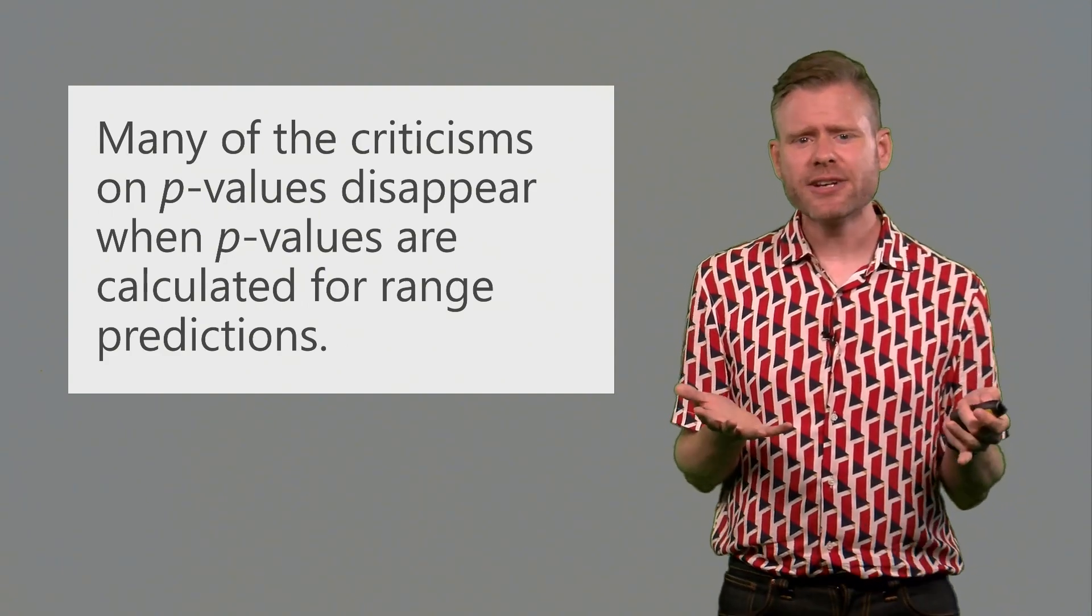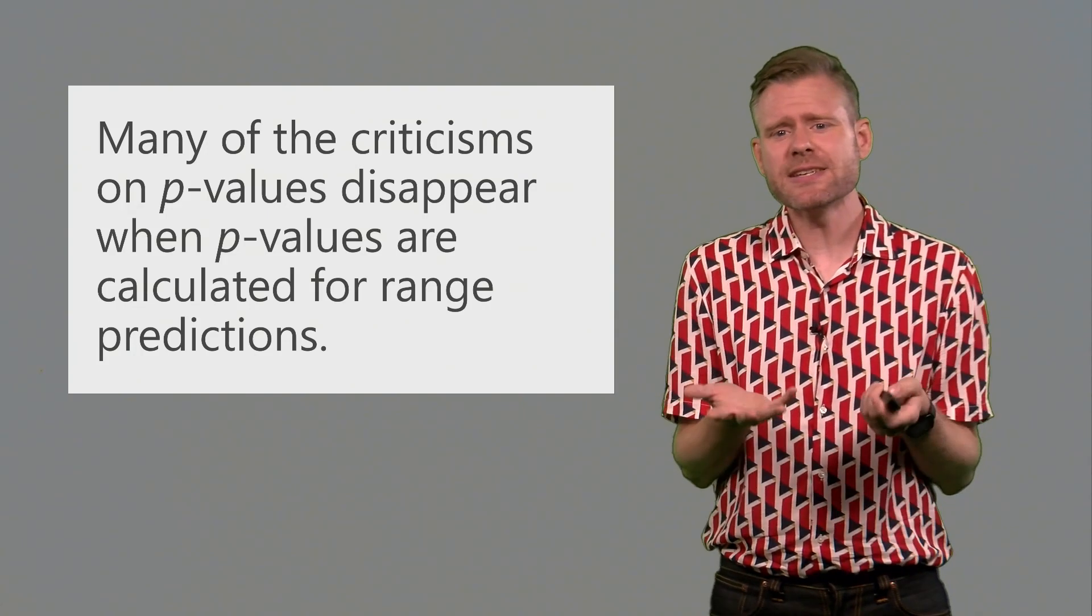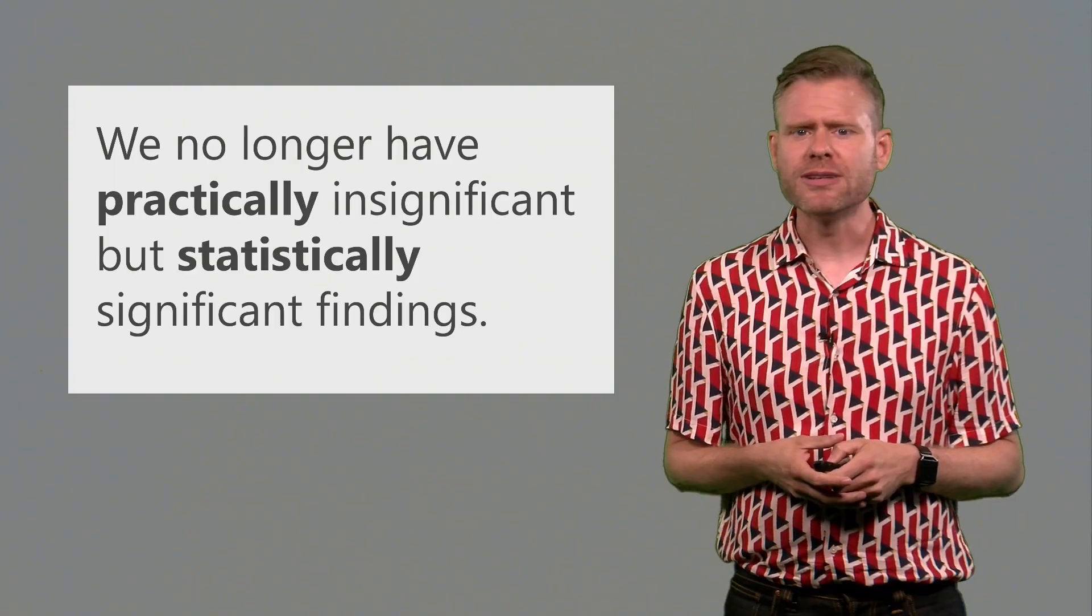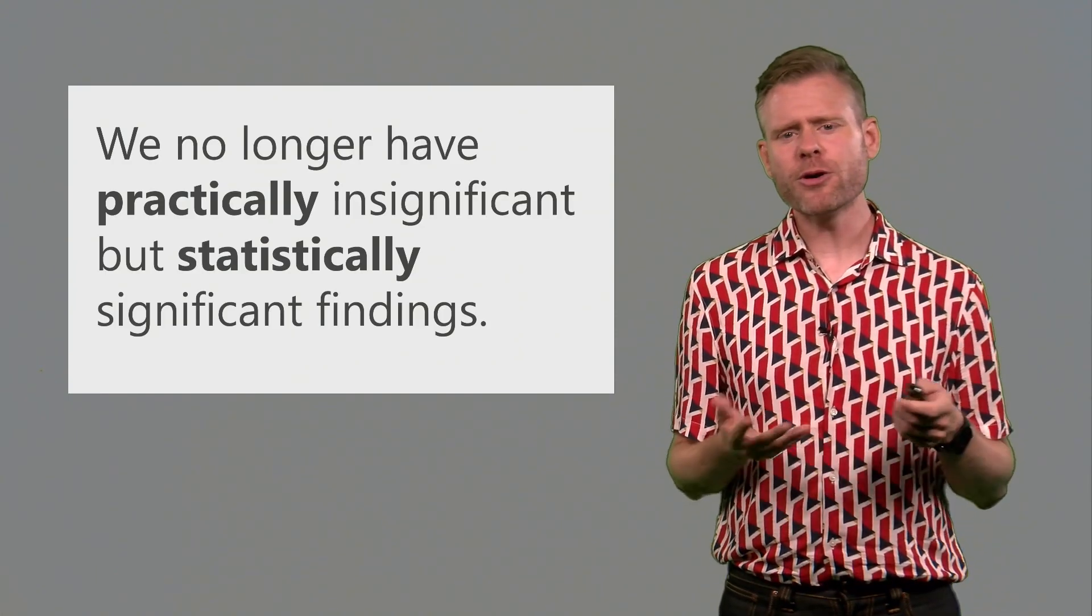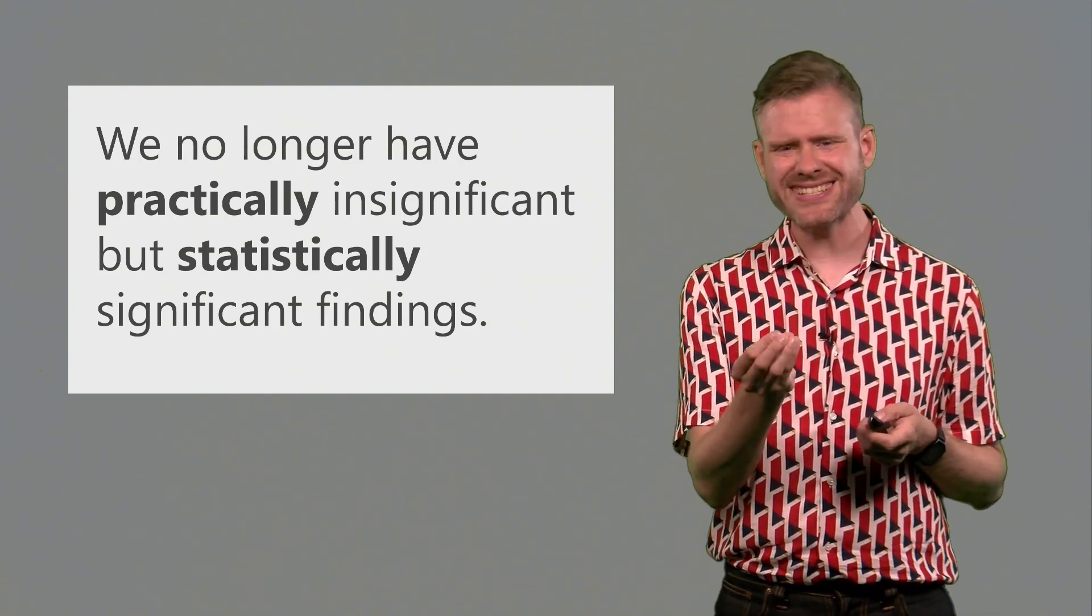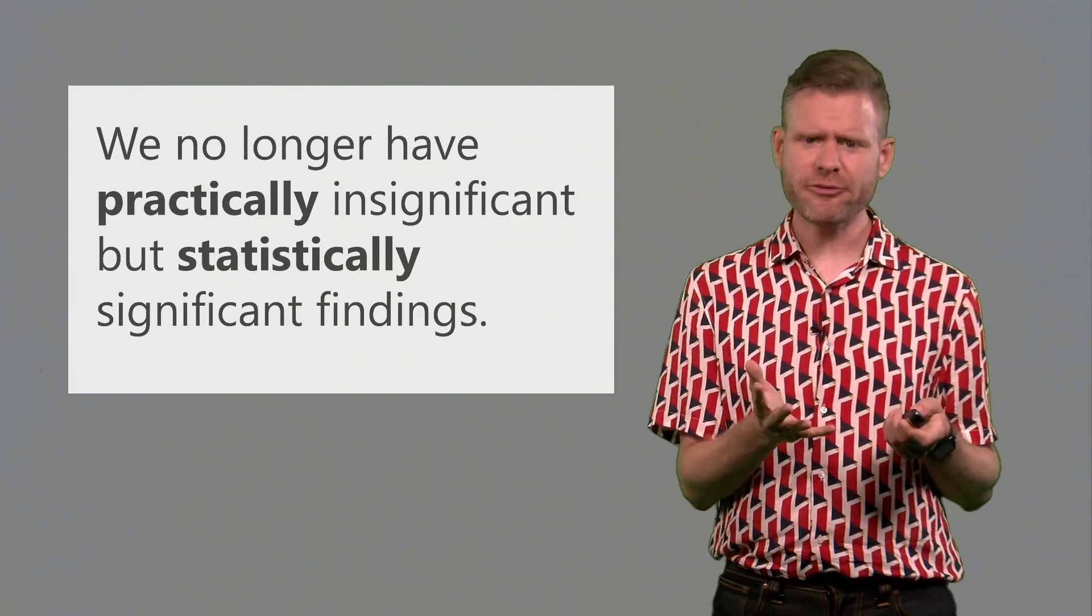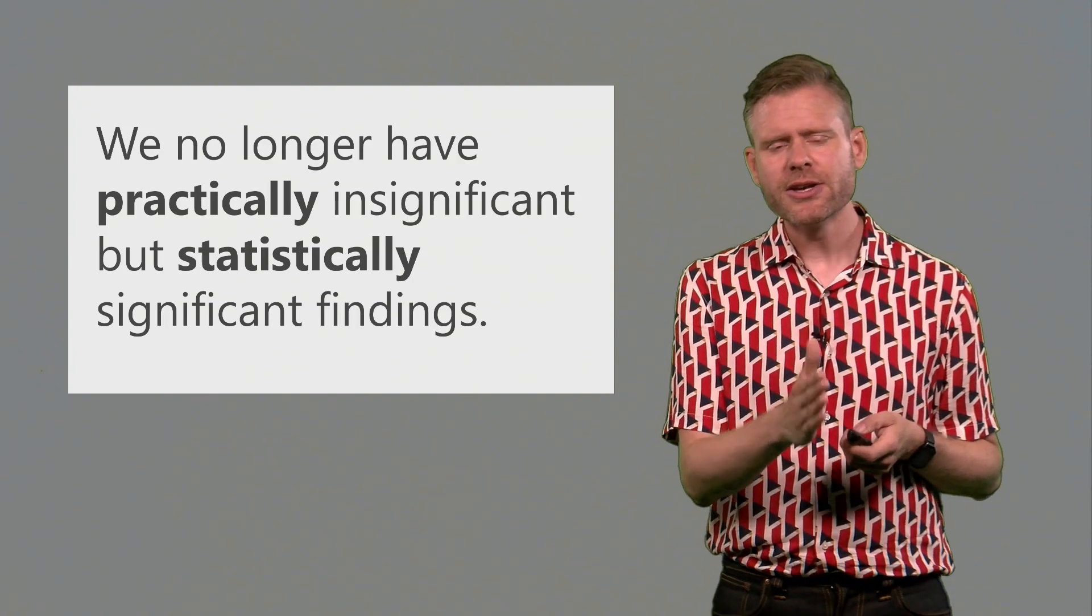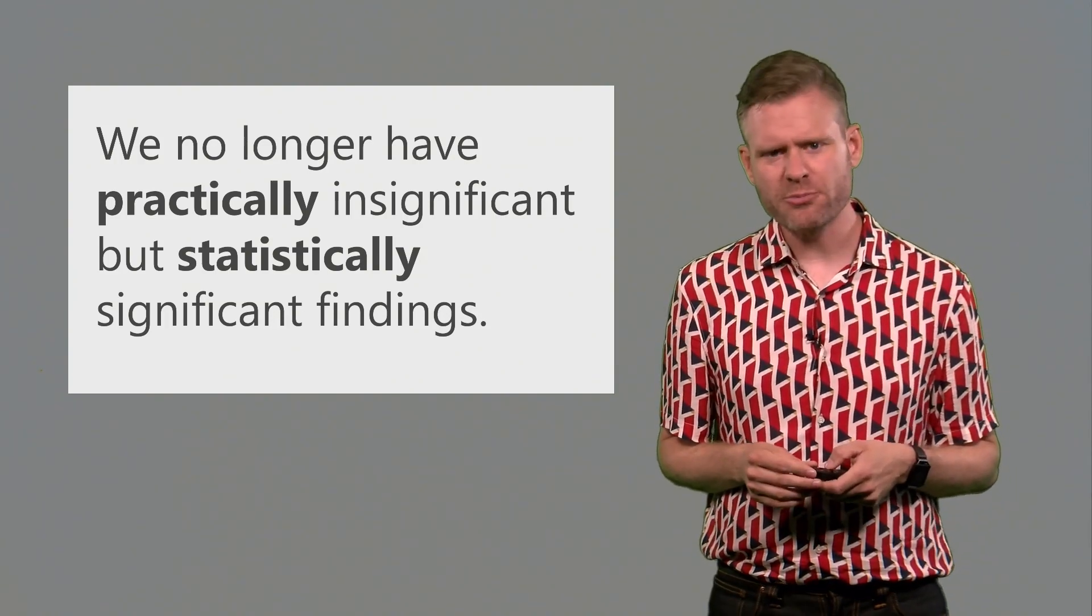Another interesting thing is that many of the criticisms on the use of hypothesis tests, especially null hypothesis tests and p-values, actually disappear when p-values are calculated for these types of range predictions. For example, we no longer have the problem that will observe a statistically significant effect for effect sizes that are too small to be meaningful. When we perform a null hypothesis test with very large samples, we might find statistical differences for very tiny effects that we don't actually care about. But in the case of a minimal effect test, we have actually tested against a value that we have determined is practically meaningful to begin with. So whenever we find a statistical significant result in a minimal effect test, as a consequence it is also practically meaningful.